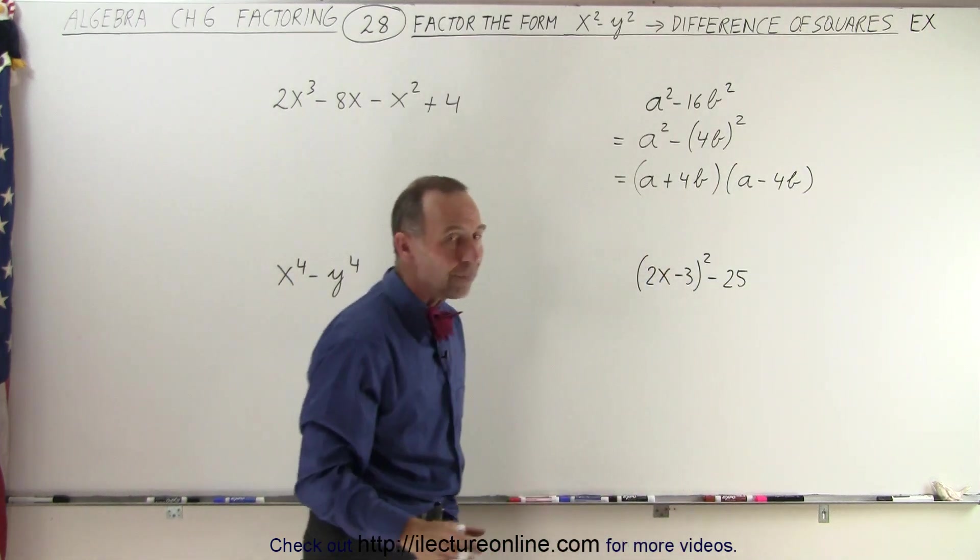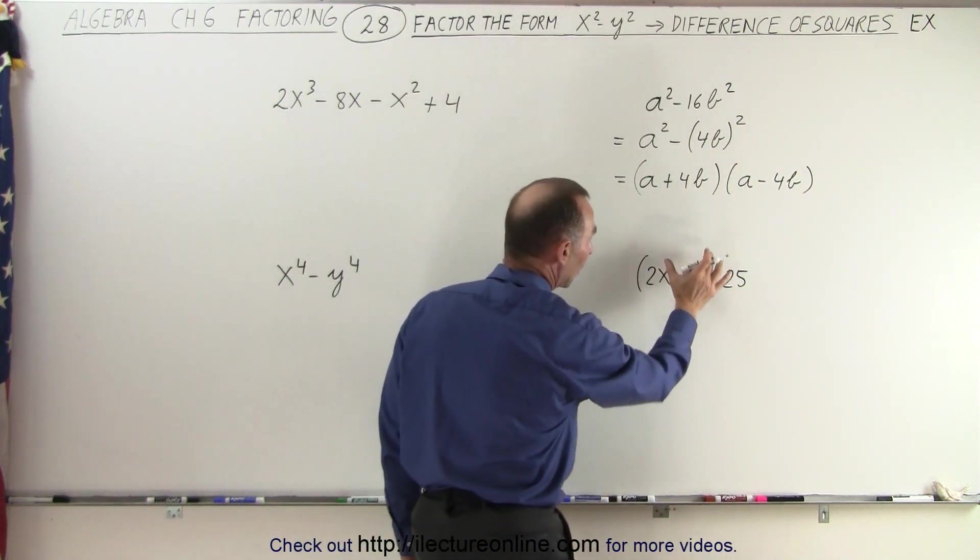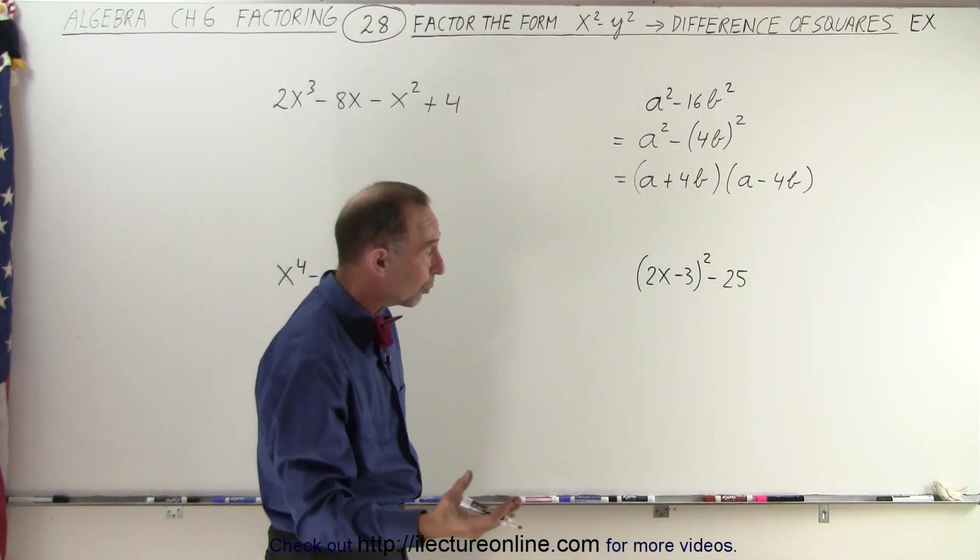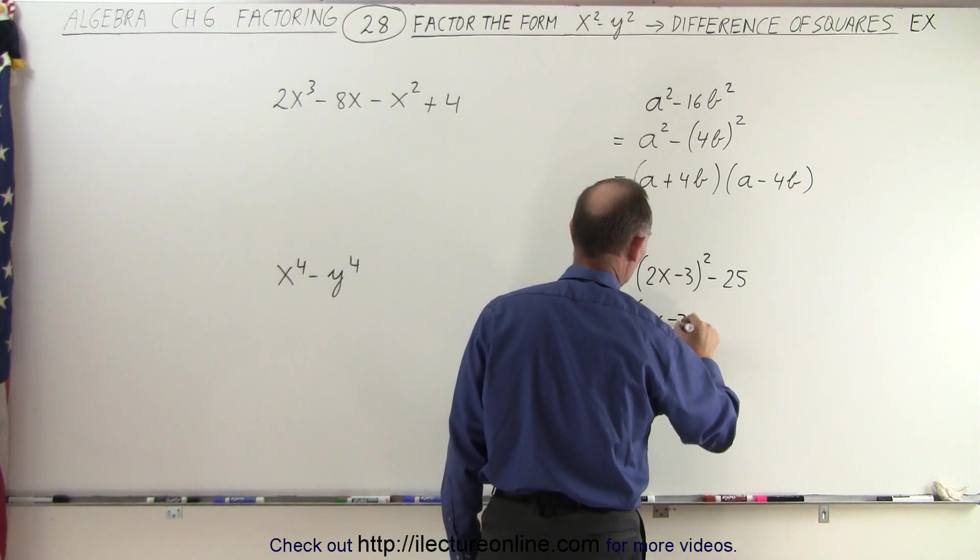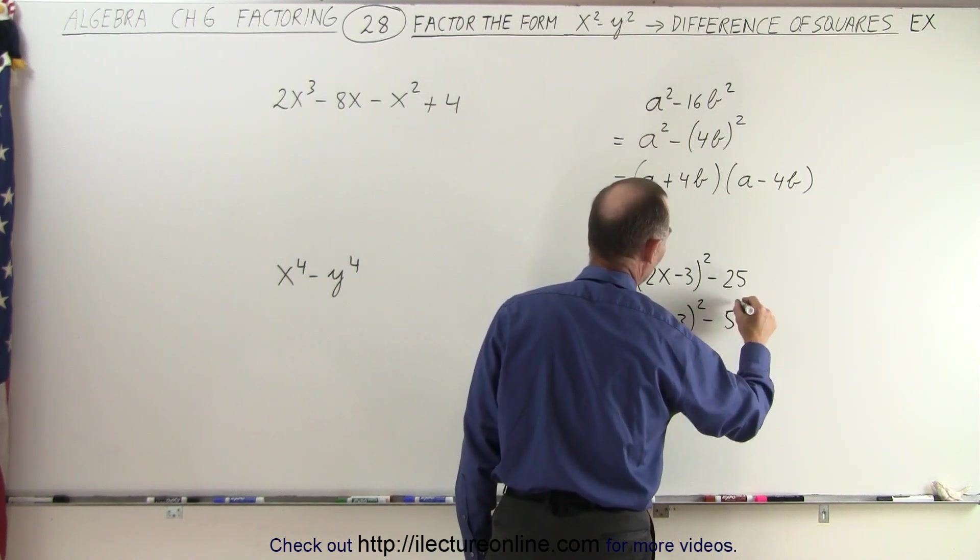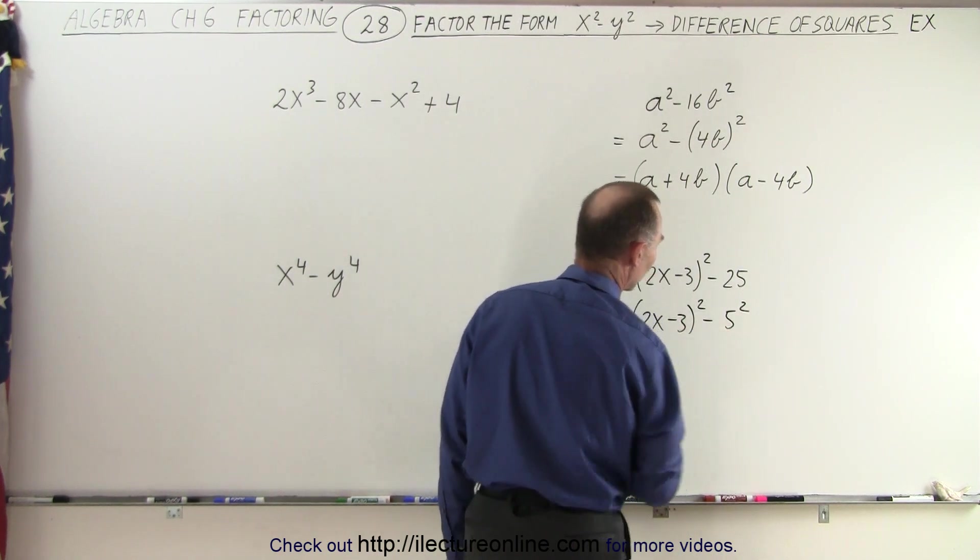Over here, the same thing. Notice we have a quantity squared minus 25, but 25 is 5 squared, so this can be written as the quantity 2x minus 3 squared minus 5 squared. Now we have the difference of two squares.